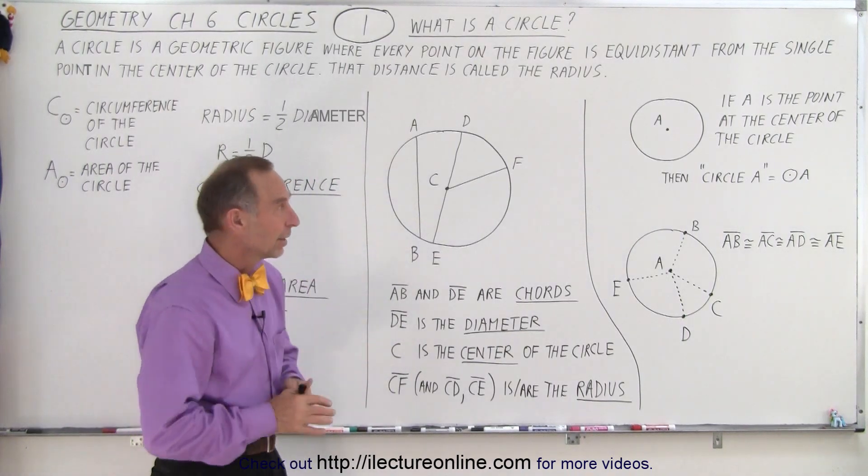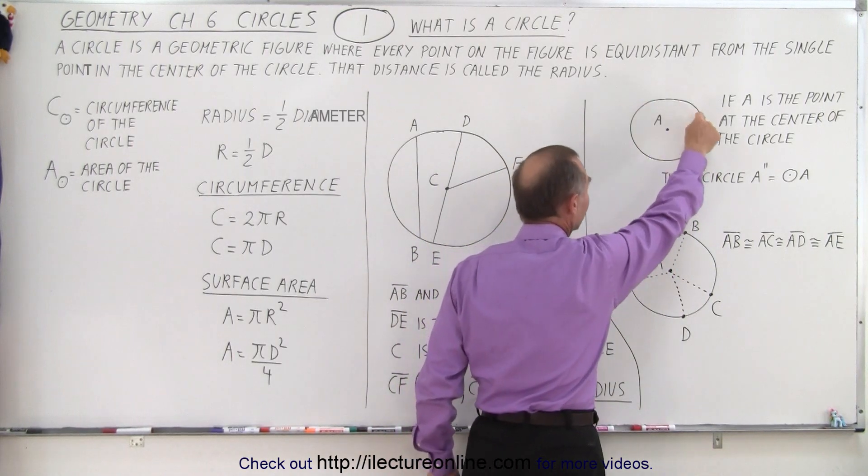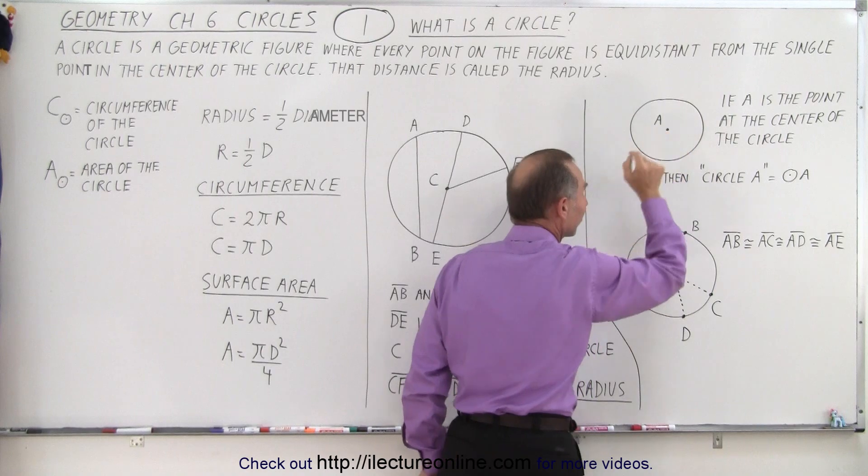It's a geometric figure such that every point on the figure, every point on the circle, is equidistant, the same distance away from the point at the center of the circle.